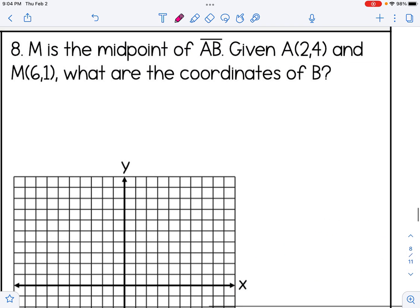On number 8, M is the midpoint of AB given A(2, 4) and M(6, 1). What are the coordinates of B? For number 8, I am not going to use the slope method on this one. I am going to show you the other option, which is where you can list the coordinates and look for a pattern. So the three points in this problem are A, M, and B. And when I list these points, M has to be in the middle, or whatever the midpoint is has to be in the middle in order for this to work. So A is (2, 4), M is (6, 1), and we don't know what B is. That's what we're looking for.